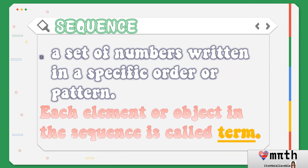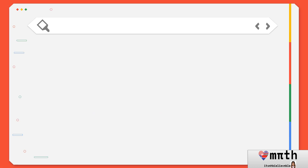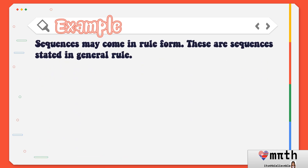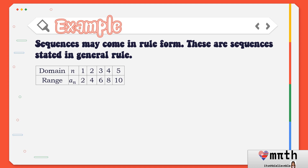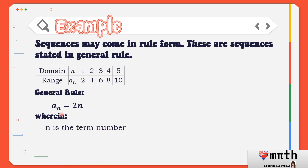Always remember that each element or object in the sequence is called a term. Sequences may come in rule form — these are sequences stated in a general rule or general term, the nth term. For our example, our domain n is 1, 2, 3, 4, 5, and the range or value of a sub n is 2, 4, 6, 8, 10. Our general rule for this sequence is a sub n equals 2n, wherein n is the term number and a sub n is the nth term.